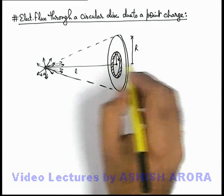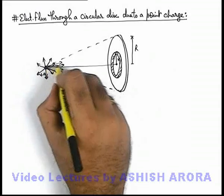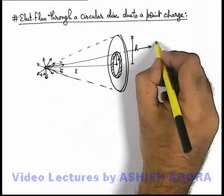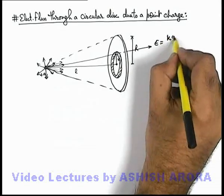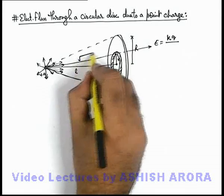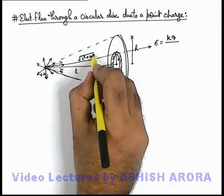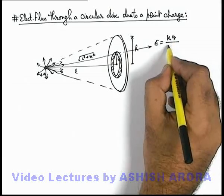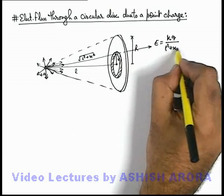At the location of this element, the electric field will be in radially outward direction and the magnitude of electric field can be written as kq by this distance square, which is root of l square plus x square. So electric field will be kq by l square plus x square.